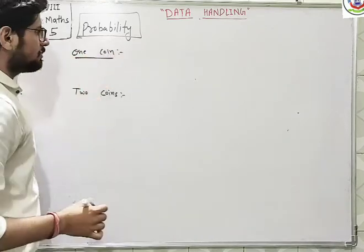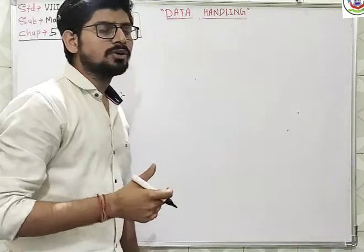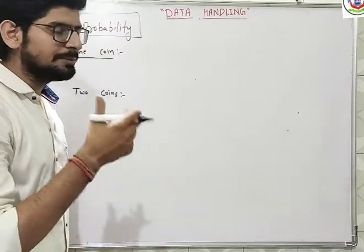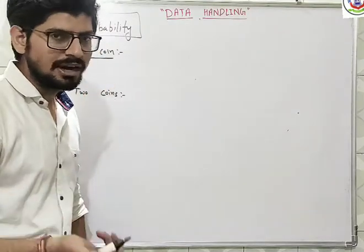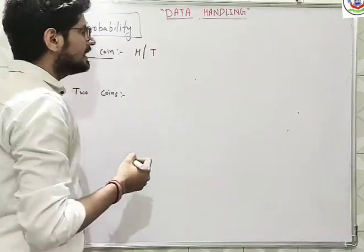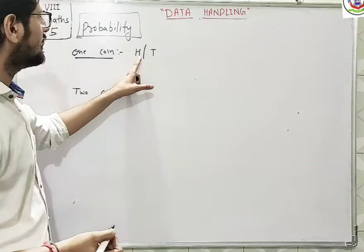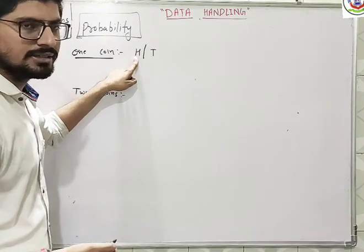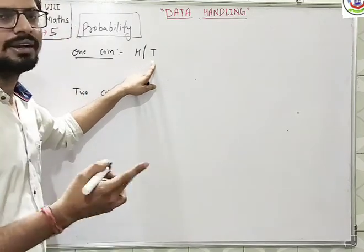So first we talk about one coin's probability. If you flip one coin, there are two possible outcomes. Either you will get head or you will get tail. So there are two outcomes - either head or tail.